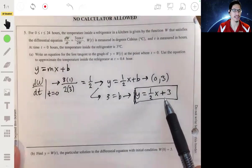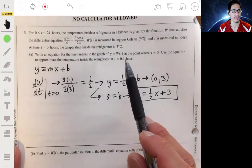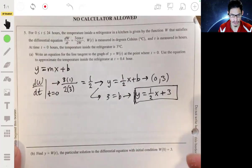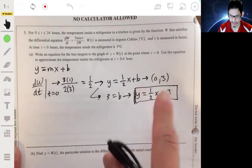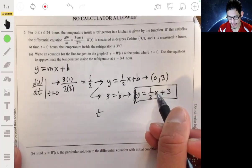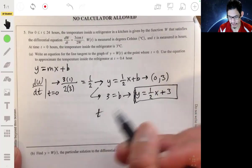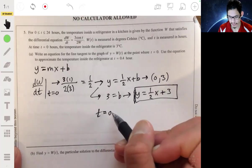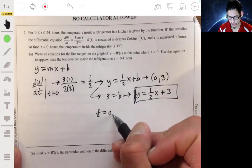And then, so using this equation to estimate the value of the temperature at T equals 0.4 hours, we just plug in 0.4 into this equation. And again, I should be writing X equals T, our variable should be T. I'm just so used to writing X.